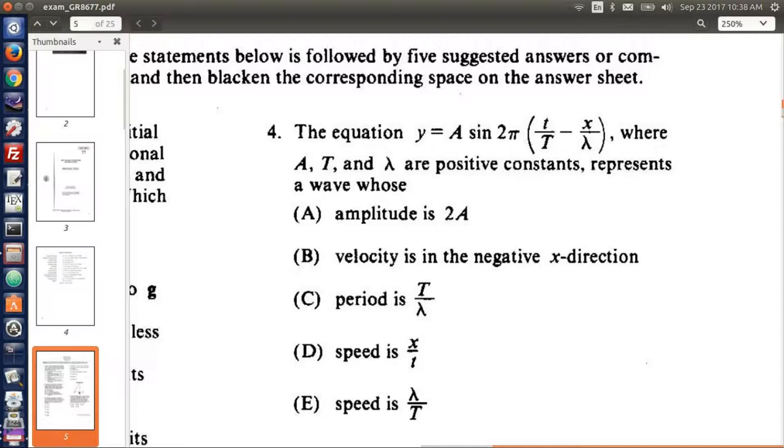The equation y equals A sine 2π of little t over big T minus x over lambda, where A, T, and lambda are positive constants, represents a wave whose...